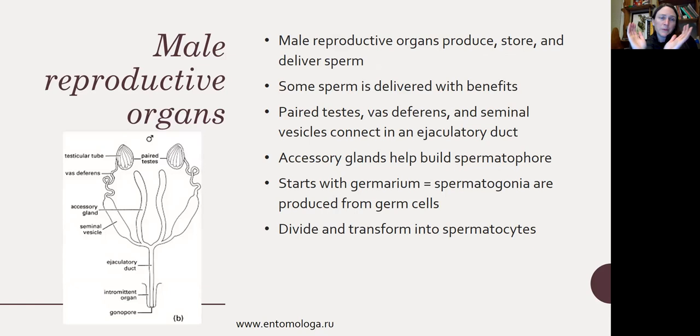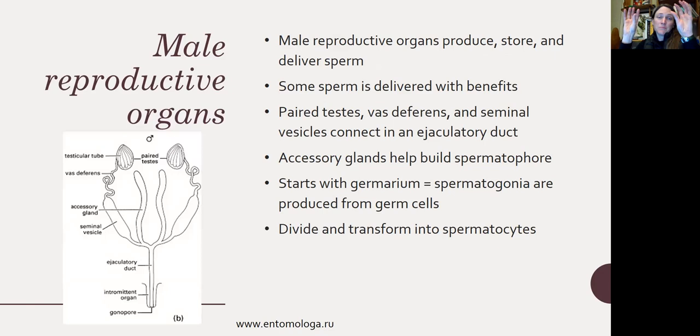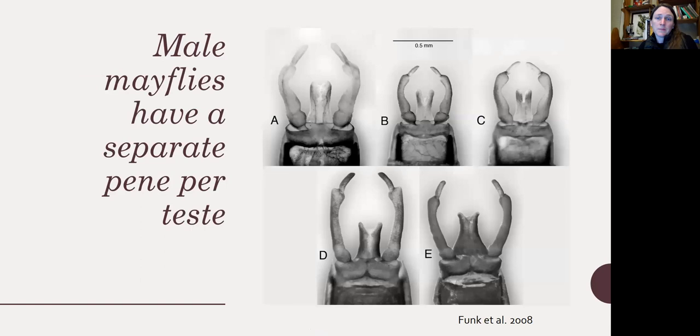Mayflies are interesting because, unlike most insects where the two seminal vesicles come together to make one reproductive organ, in mayflies — both males and females — the ovaries develop eggs through two separate tubes. In mayfly males, sperm is developed through two separate penises. So male mayflies have a separate penis per testis.